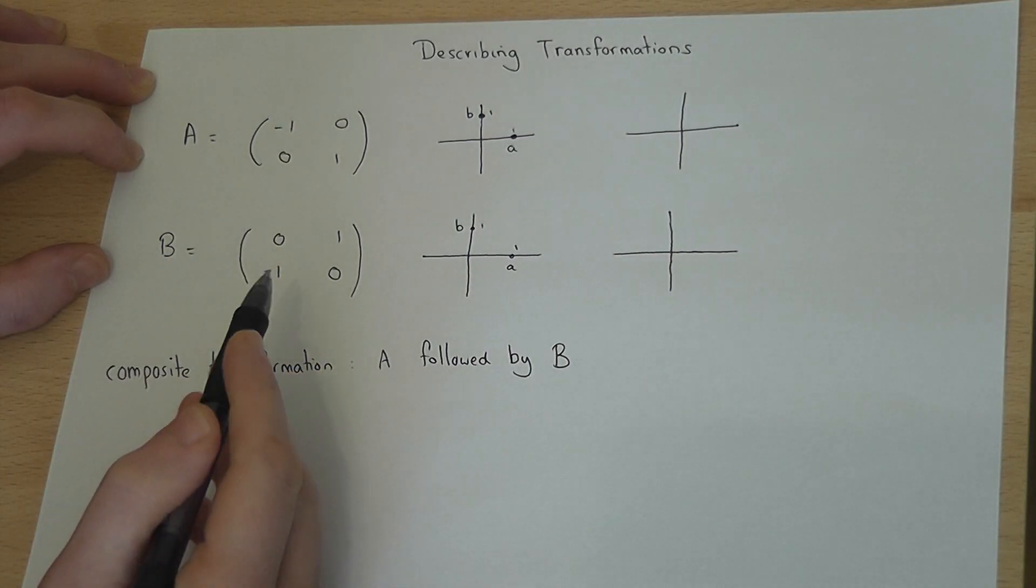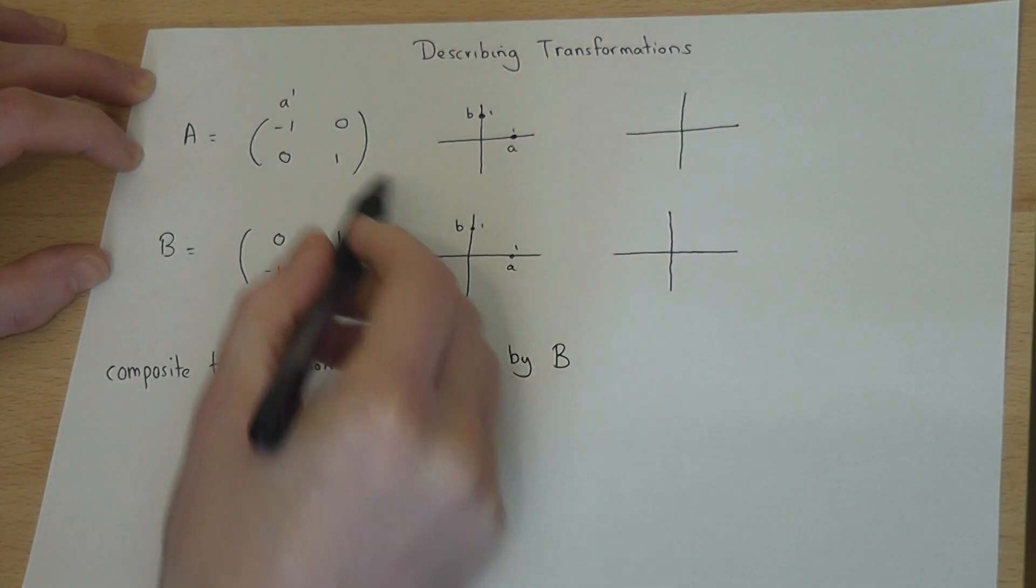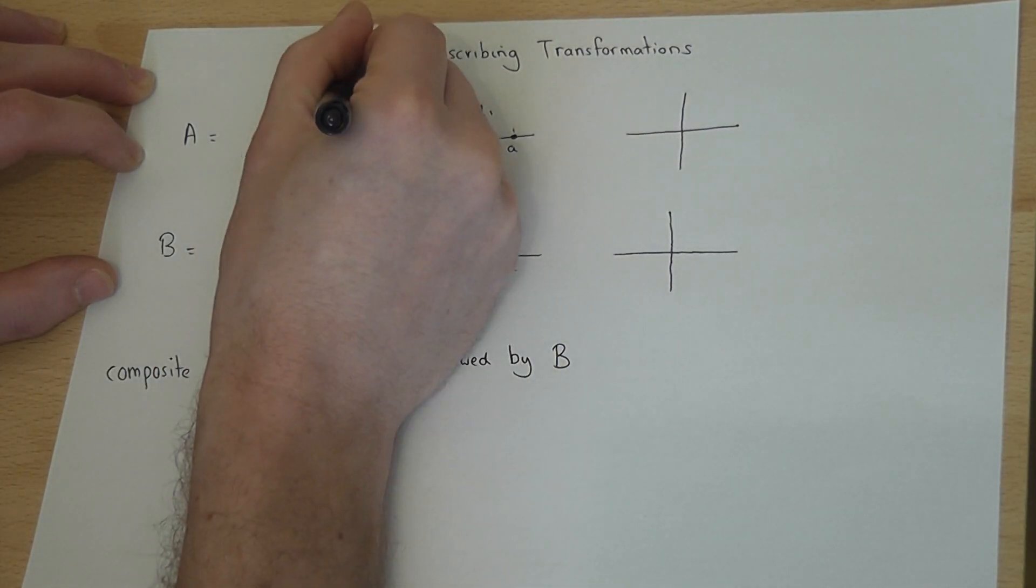The first column is what happens to A, so A becomes A dash. The second column is what happens to B, so B becomes B dash.